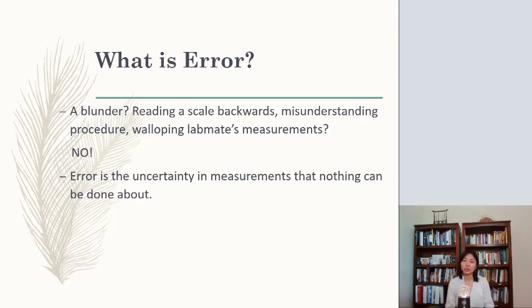Error is the uncertainty in measurements that nothing can be done about. For instance, if you want to measure radiation from the sun here in Houston, you are meant to have some error because you cannot control the clouds in the sky. You cannot control the humidity in the air, right? So there's nothing you can do about it with existing tools and the environment unless you go to space. So that's another story.